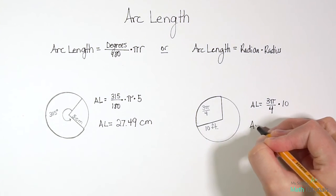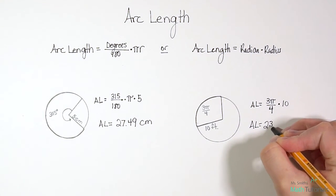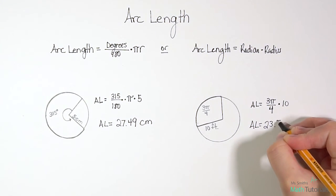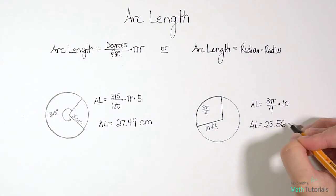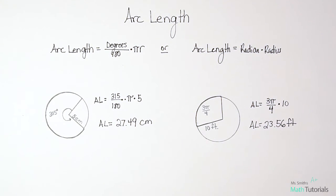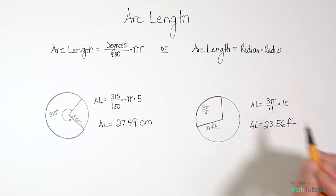So we've got arc length equals 23.56. And then our unit of measure would be feet. So the distance from here to here would be 23.56 feet.